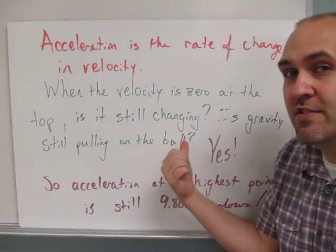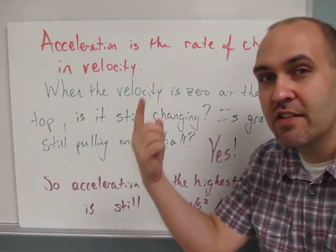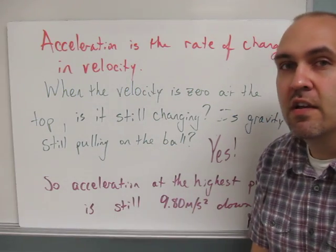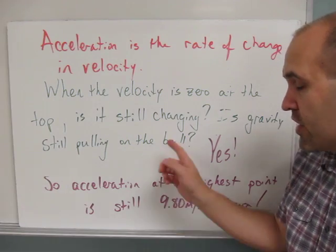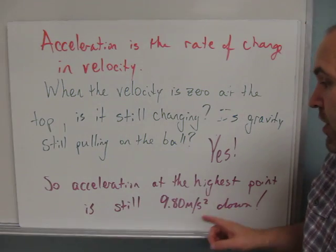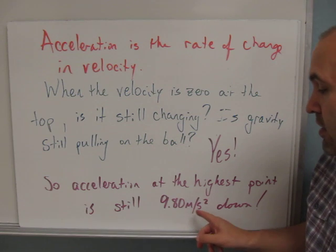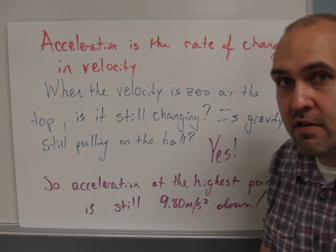Is gravity still pulling on the ball? The answer to both of those questions is yes. So even when the speed at the very top is zero, it's changing from zero to something else. Gravity is still acting on the ball. So the acceleration at the highest point is still 9.80 meters per second squared down.